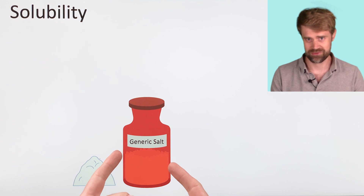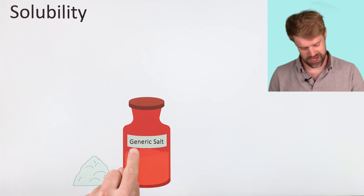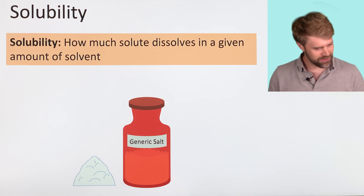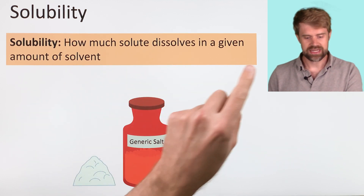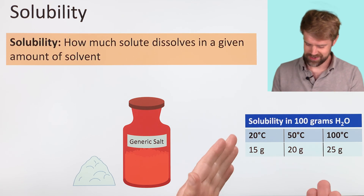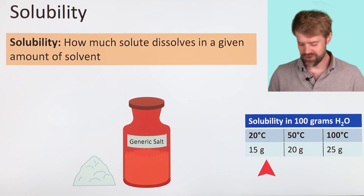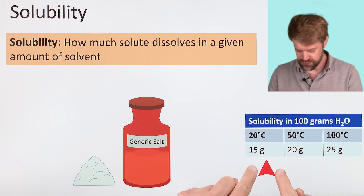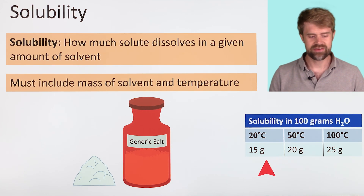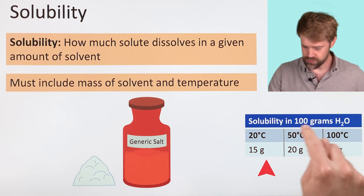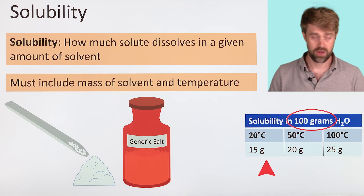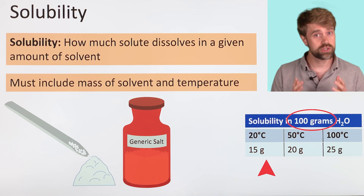Here's a substance we're going to dissolve. To make things easier, we're just going to use a made-up generic salt. We look up the solubility of our salt. Solubility is how much solute dissolves in a given amount of solvent. You can find this information on a solubility chart. We find that at 20 degrees Celsius, the solubility of our salt is 15 grams per 100 grams of water. Solubility values always include the amount of solvent and the temperature. Most charts use 100 grams of water, but it's good to check just to be sure.